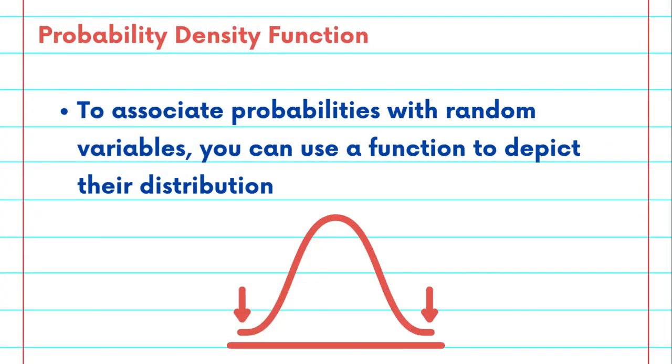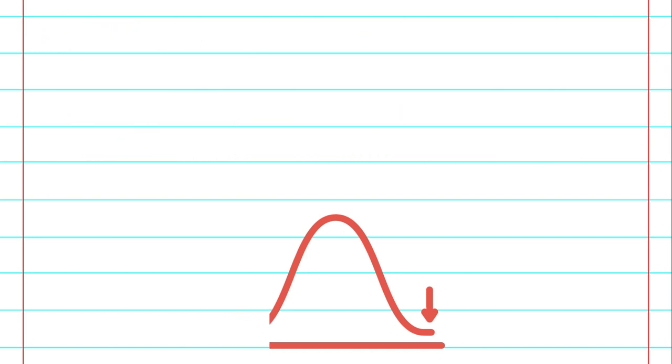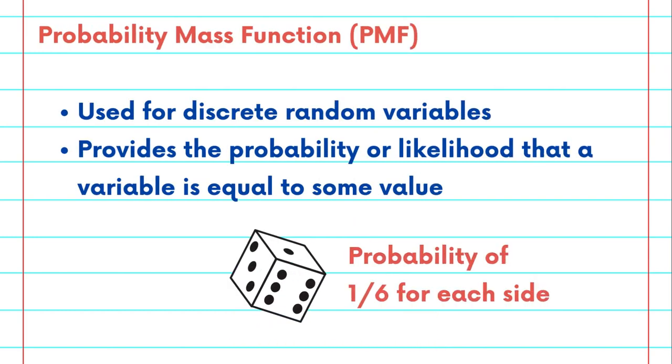To associate probabilities with random variables, we use functions to depict their distribution. The probability mass function, or PMF, is used for discrete random variables. It provides the probability for each distinct value that the variable can take.